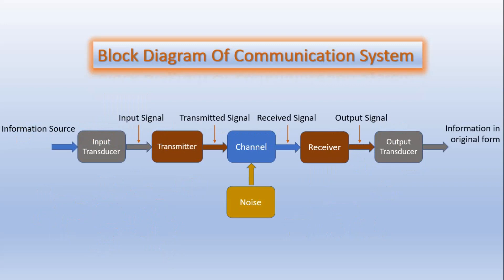During the process of transmission and reception, the signal gets distorted due to noise introduced in the system. Noise is an unwanted signal which tends to interfere with the required signal. Noise signal is always random in character. Noise may interfere with signal at any point in a communication system.